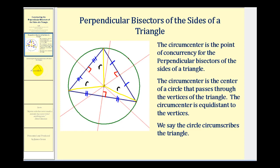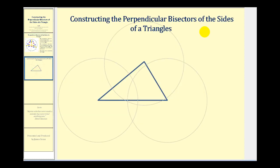Now let's take a look at our construction. We're going to need a compass and a straight edge. For this entire construction, we're going to leave the radius of the compass the same. The only restriction is that we have to make sure the radius of the compass is more than half the length of the longest side of the triangle. So this would be the longest side of the triangle. Let's go ahead and put the point of the compass here, then put the pencil past the midpoint, maybe somewhere here, and we'll leave this as a radius for the entire construction.